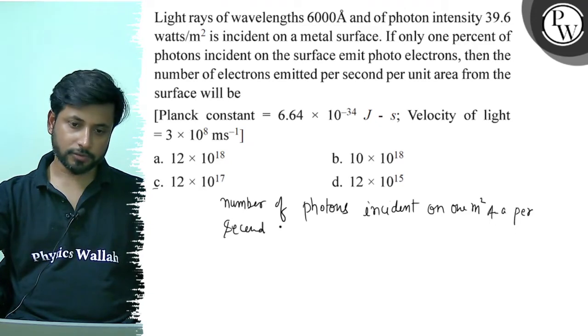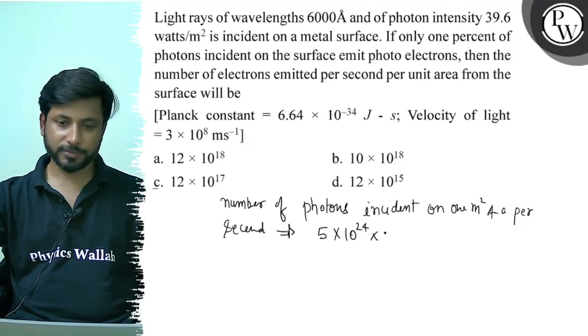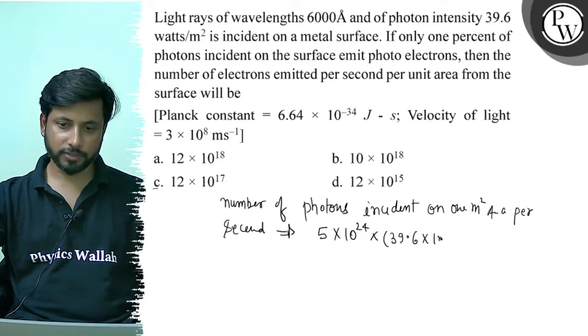Per second. So here it will be 5 into 10 to the power 24 into intensity multiplied by area. Intensity is 39.6 and area is 1 meter square.